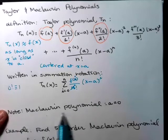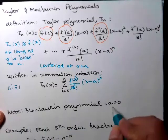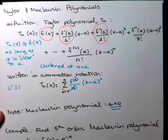Maclaurin polynomial. We call it a Maclaurin polynomial or a Maclaurin series if a equals zero.